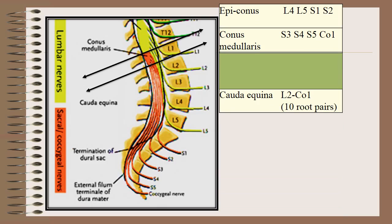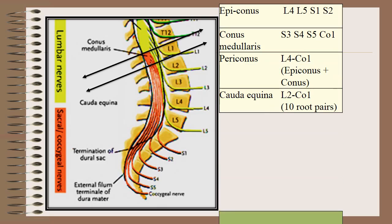The epiconus is nothing but L4, L5, S1, and S2, and the periconus is nothing but epiconus plus conus.